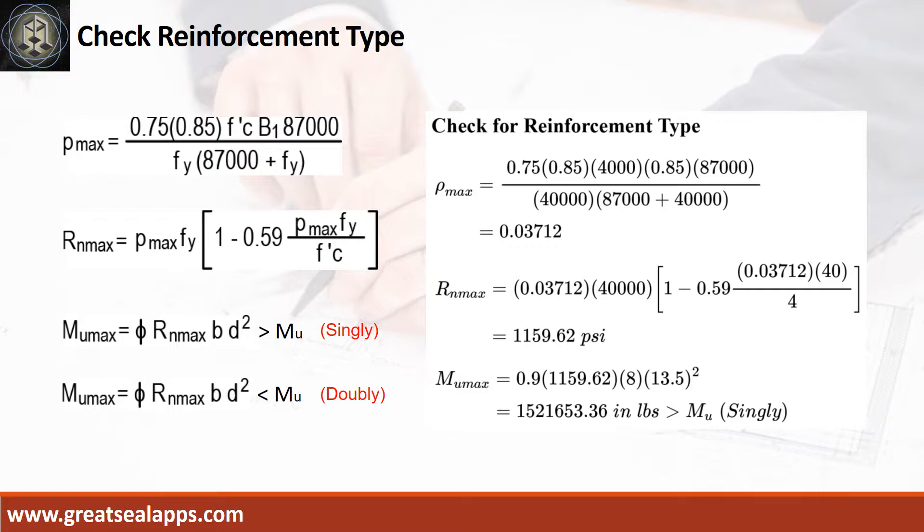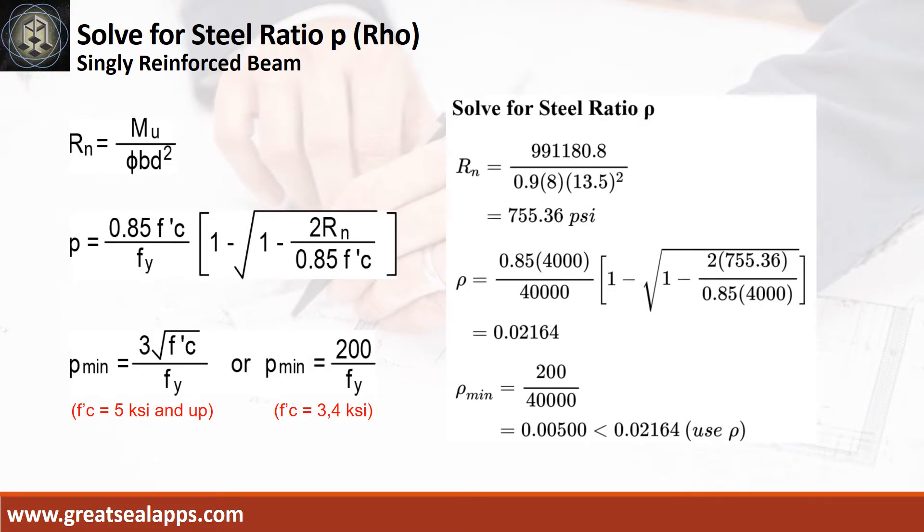Followed by maximum moment from given section, Mu max equals 1,521,653.36 inch-pounds, which is greater than the maximum design moment, Mu, given Mu equals 991,180.8 inch-pounds,